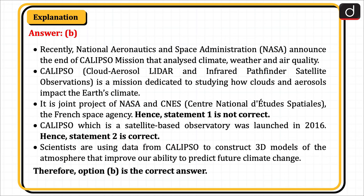Calypso, which is a satellite-based observatory, was launched in 2006. Hence, statement 2 is correct. Scientists are using data from Calypso to construct 3D models of the atmosphere that improve our ability to predict future climate change. Therefore, option B is the correct answer.